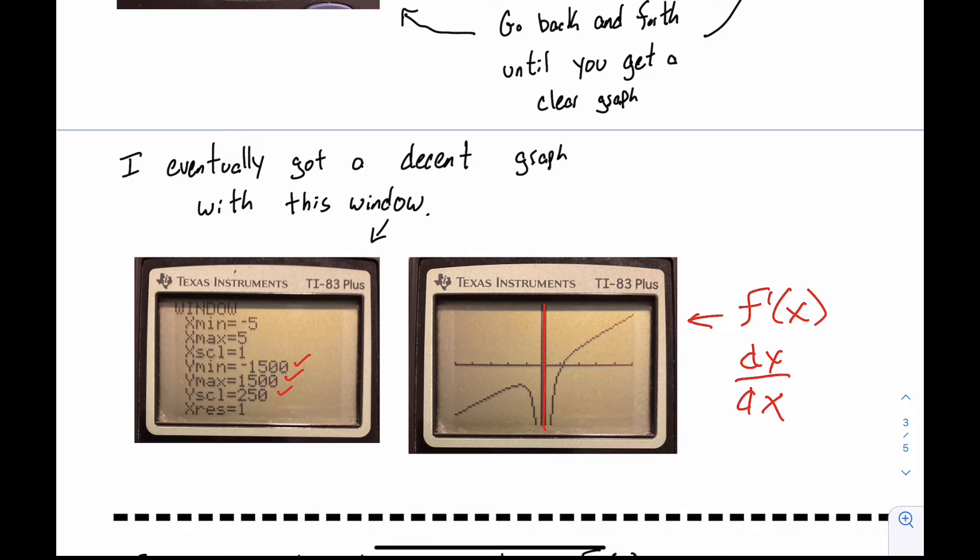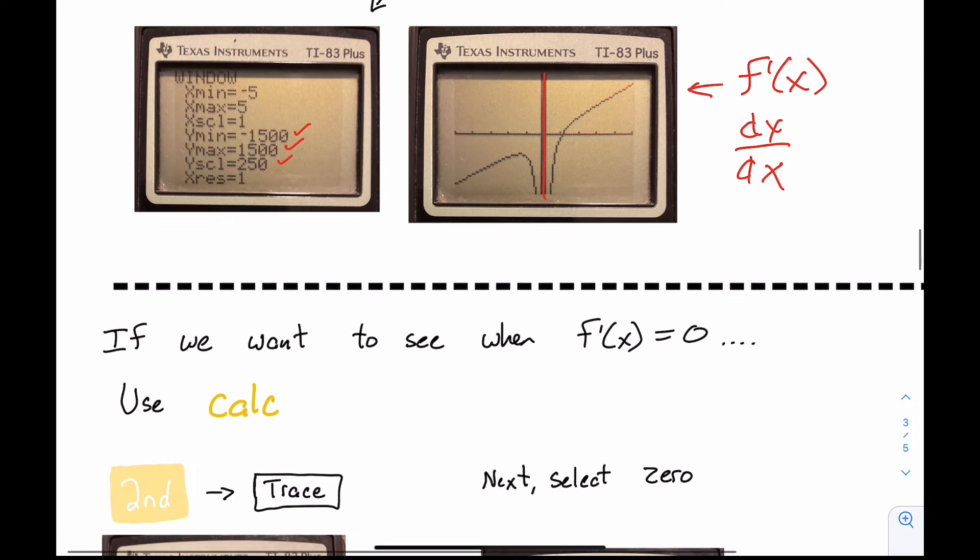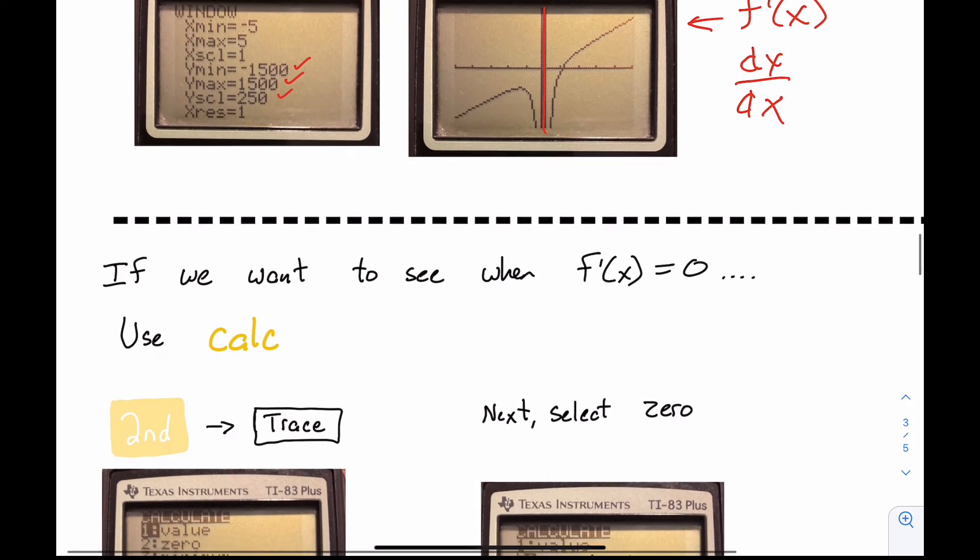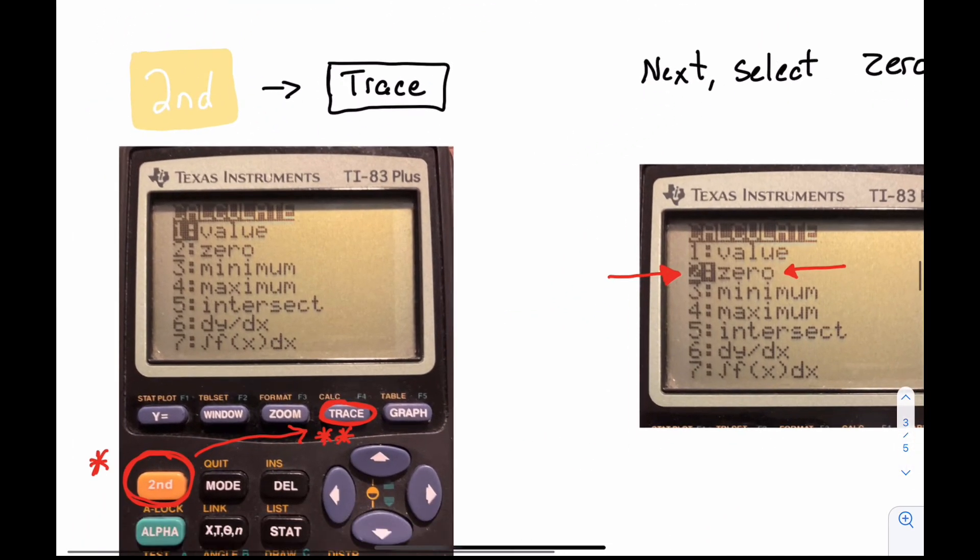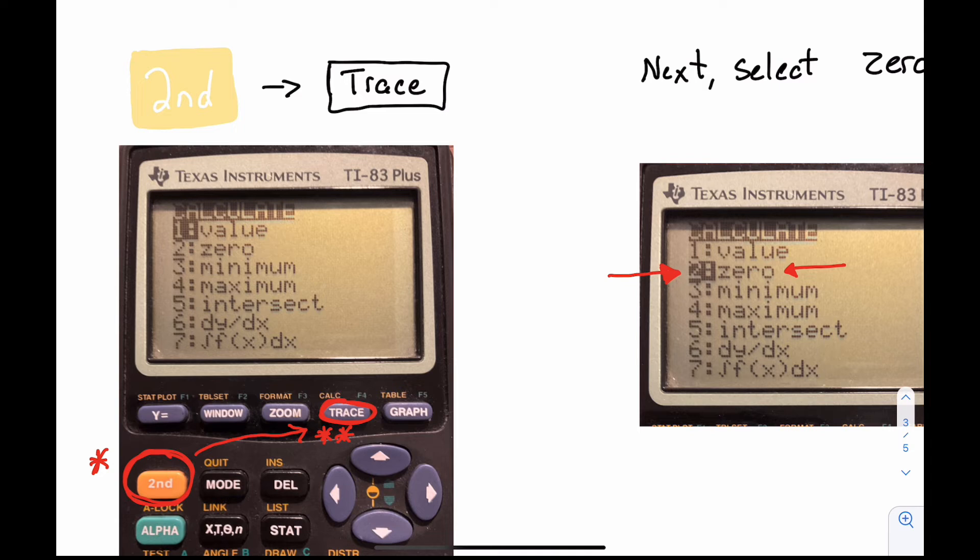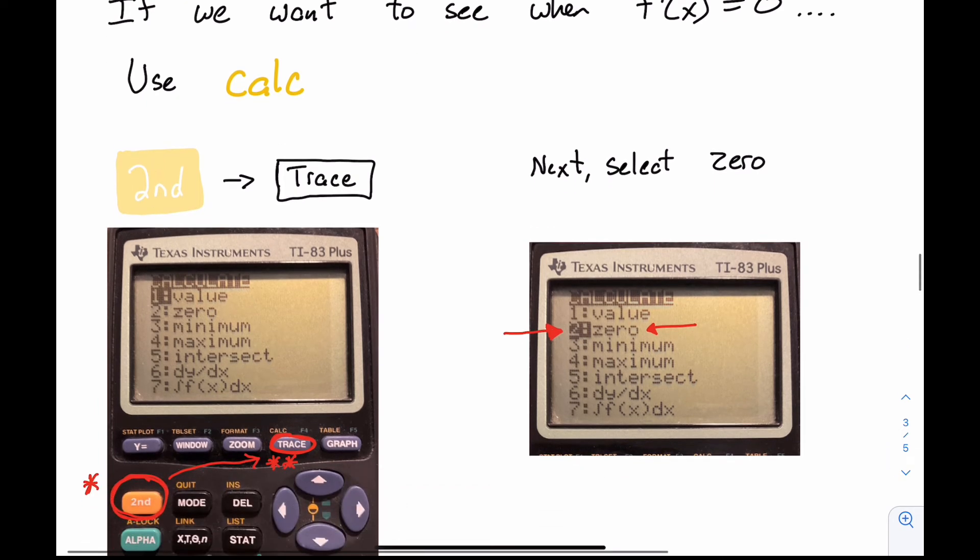When is the derivative 0? So I'm going to go a step further than getting just this graph. Maybe this is all you needed. But if I want to see when the derivative is 0, I'm going to have to use calc. And that's an option in your calculator. And so you can see over here on the left, we've got a second button. And I want to use the calculate feature on the trace button. So to activate any of those, you have to hit the second and then trace. If it's a different color for you, no big deal. It's the same stuff. And then you can see in the calculate menu, you've got a bunch of options. You can just get the value on the graph. I want to get the 0.